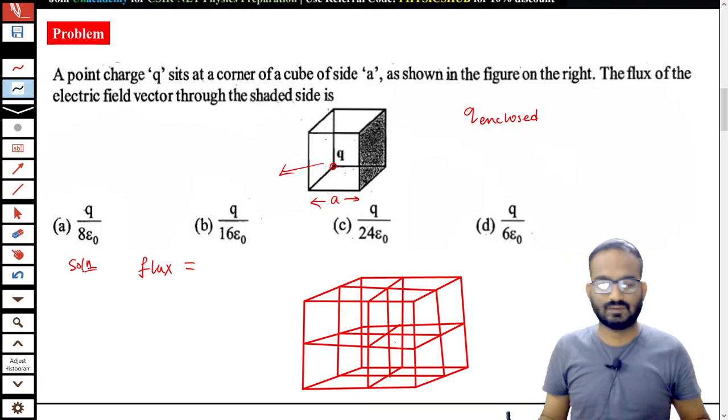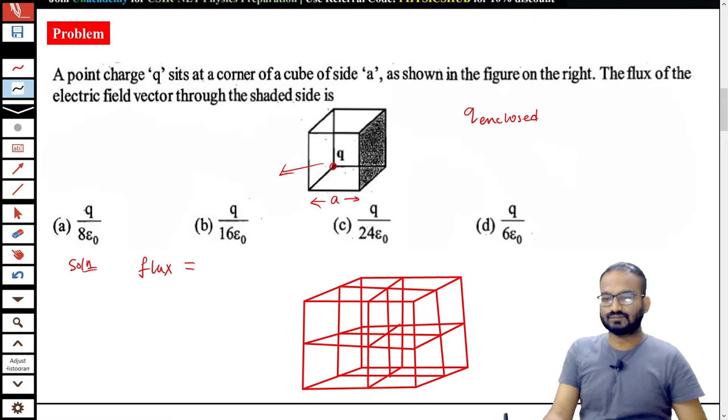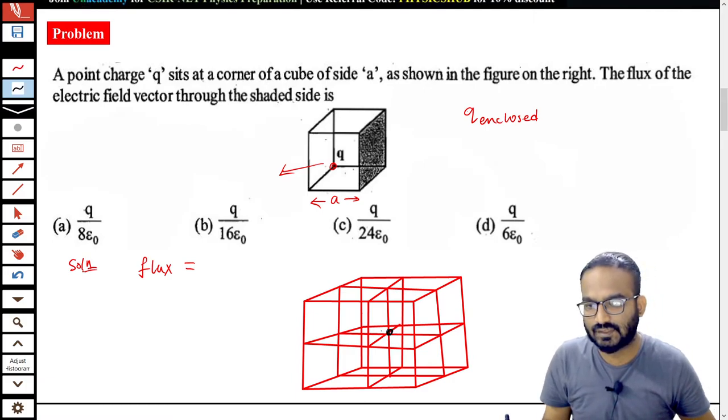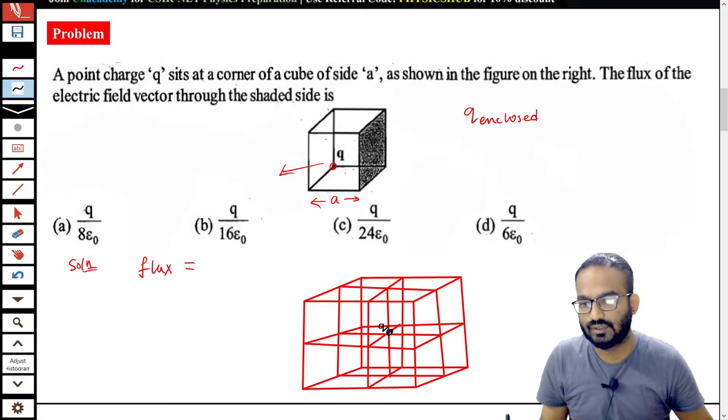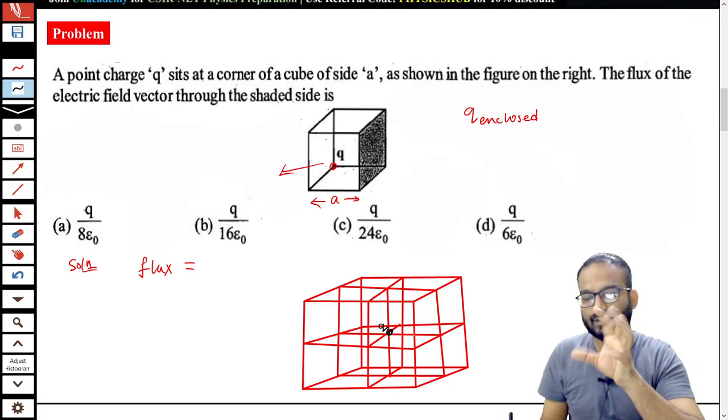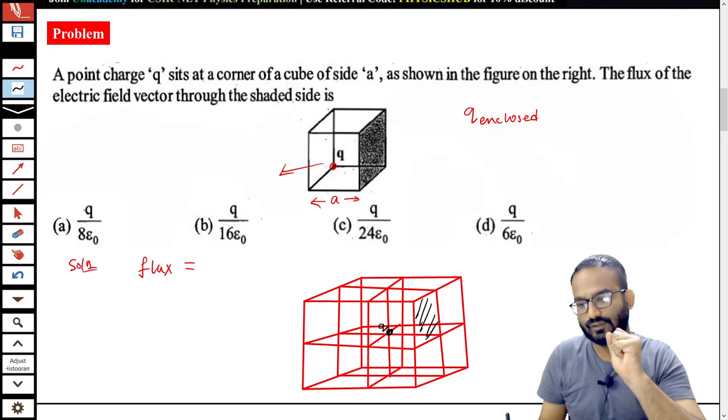Now the situation is this is the charge Q given to you, which is now at the center of this big cube and we have to find out the flux through this shaded area.